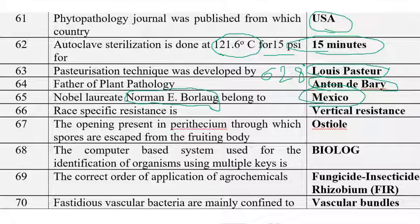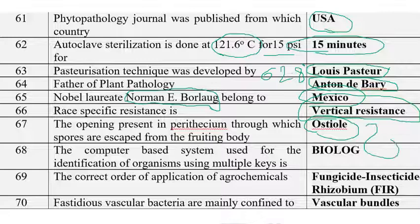Race-specific resistance is another name for vertical resistance, while race-nonspecific resistance refers to horizontal resistance. The opening present in the perithecium through which spores are released from the fruiting body is called the ostiole.